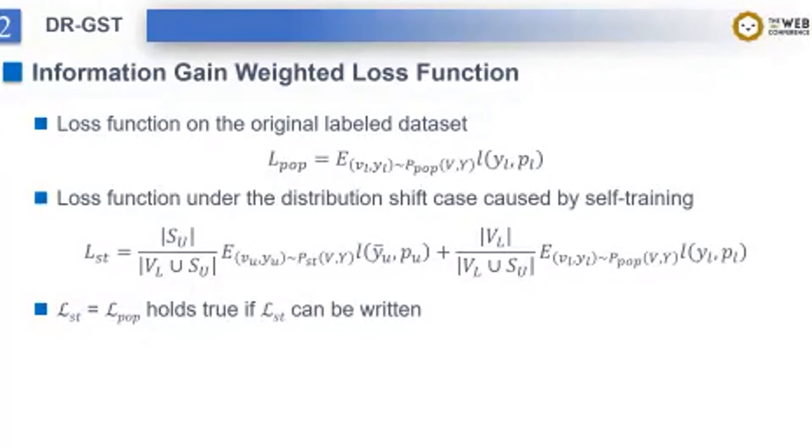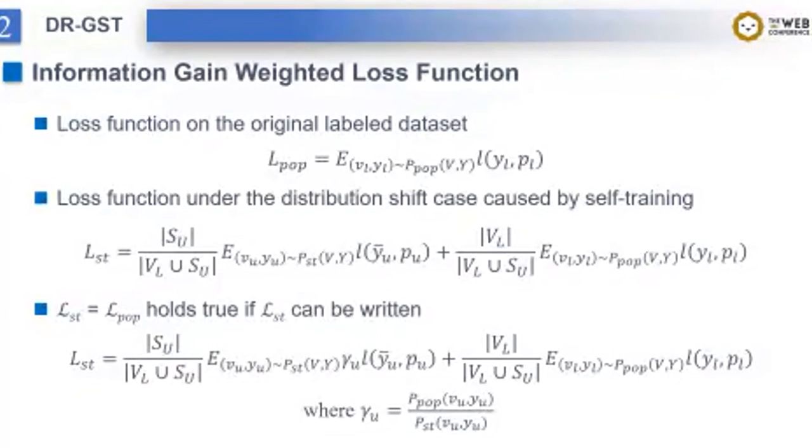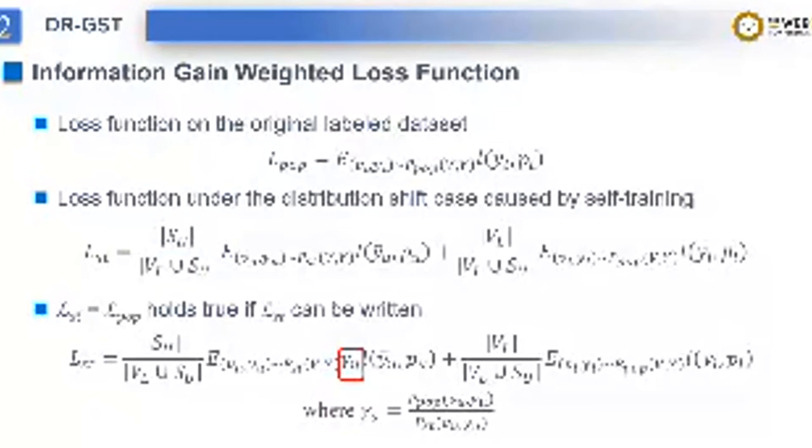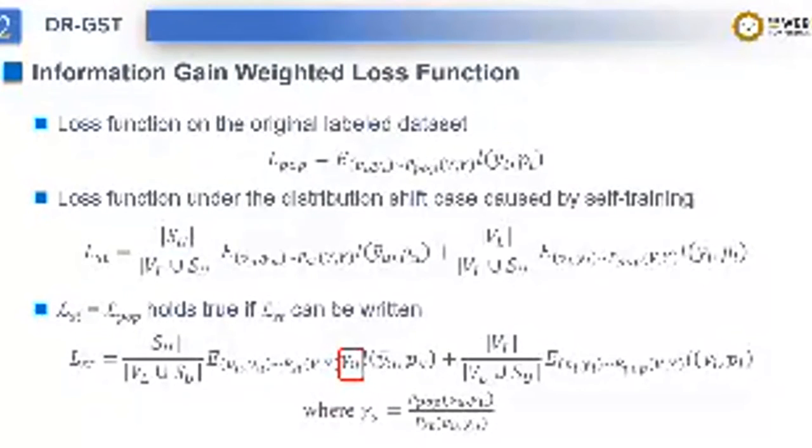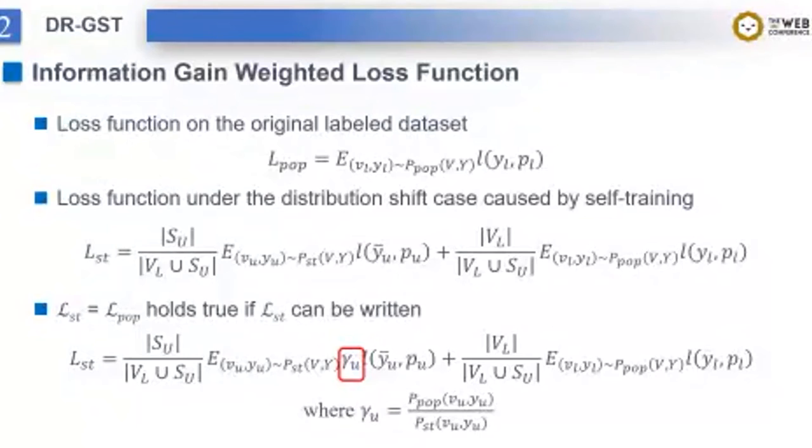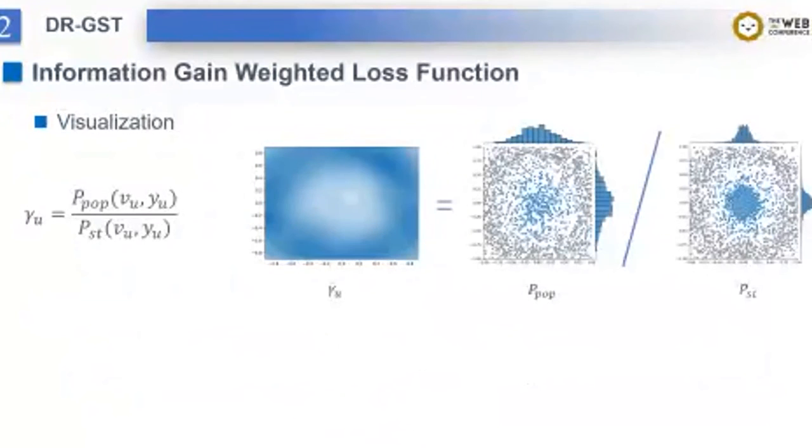Luckily, we find that if there is an additional weight term gamma_u in L_ST, L_ST would be equal to L_POP. The weight term gamma_u is the ratio of the population distribution to the shifted distribution for node v_u. Next, we need to calculate gamma_u. However, we know that the population distribution P_POP in L_ST is generally intractable, which means that gamma_u can't be accurately calculated. In order to solve this problem, we visualize gamma_u as follows. The darker area means the larger gamma_u. We observe that gamma_u becomes smaller when getting closer to the central area.